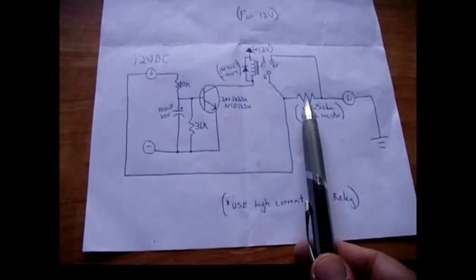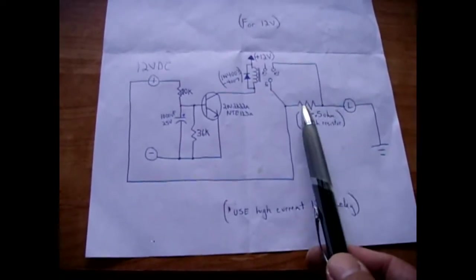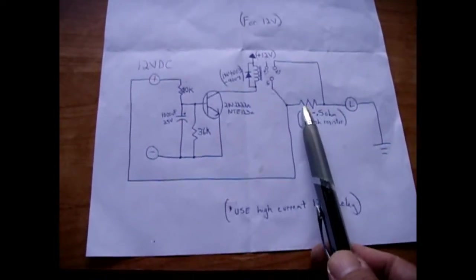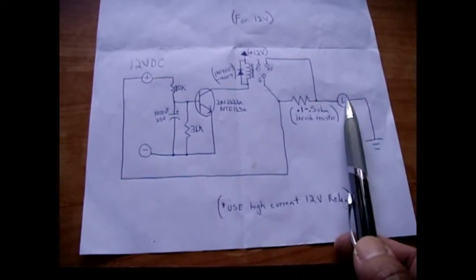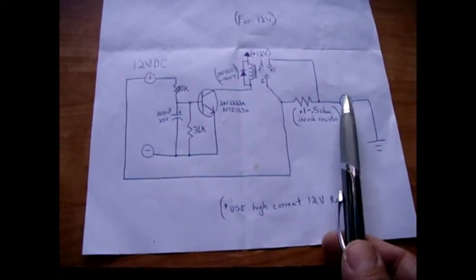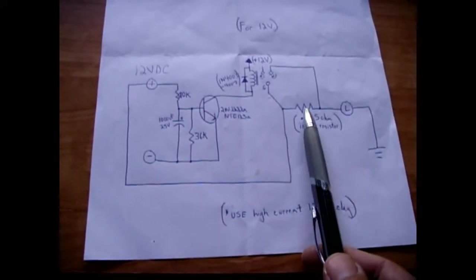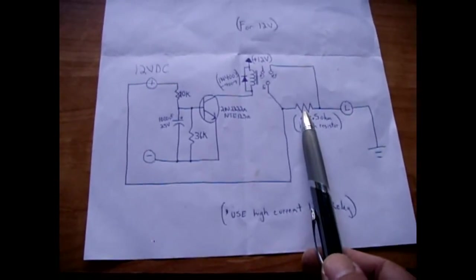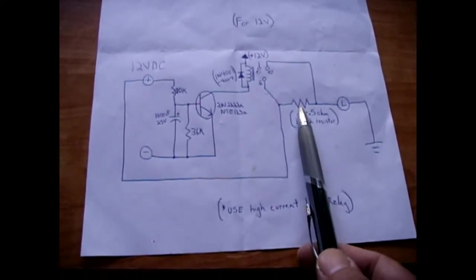It starts out as a higher resistance, and when the current flows through it, it heats up, the resistance drops, and then you get almost full current going to the load. Meanwhile while this is getting full current, the thermistor is extremely hot, so you do need adequate cooling for the thermistor.